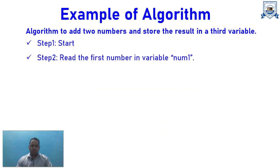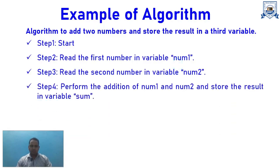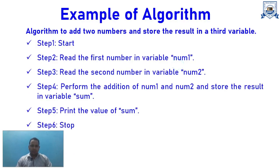Step 1: declare the variables. Step 2: read the first input from the user and store it in num1. Step 3: read the second number and store it in num2. Step 4: perform the addition and store the result in the variable 'sum'. Step 5: print the value of sum. Step 6: stop. This is a simple, clear, and finite set of steps for writing an algorithm.